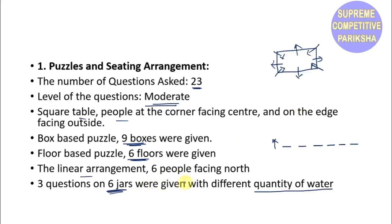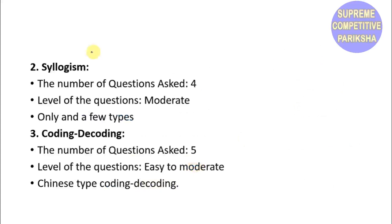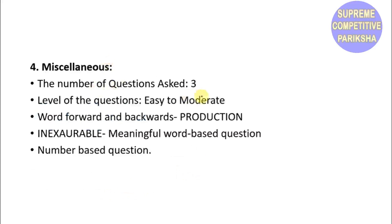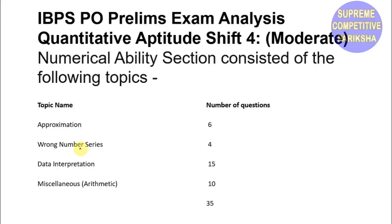Syllogism had 3 questions with moderate level difficulty, and only a few types were asked. This is a very famous type nowadays. Coding-Decoding had 5 questions with easy to moderate level, including Chinese type coding. Miscellaneous had 3 questions with easy to moderate level, including word forward and backward with the word PRODUCTION. There was a meaningful word-based question and a number-based question.